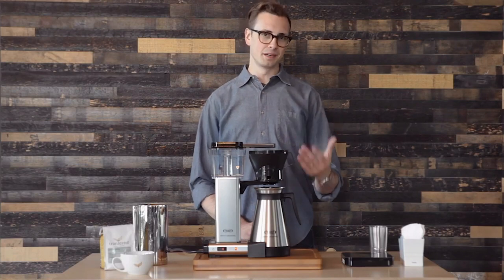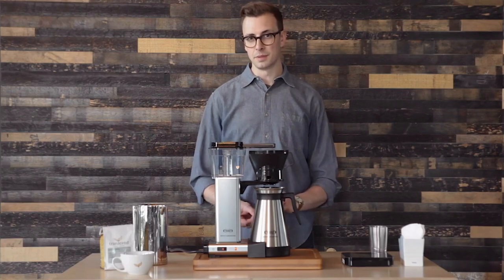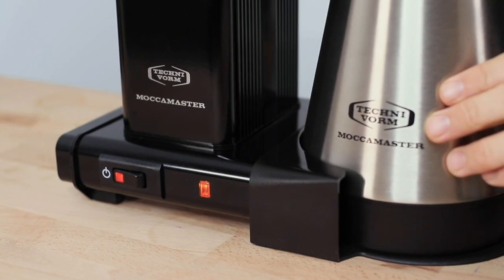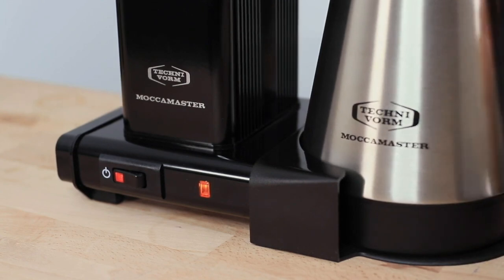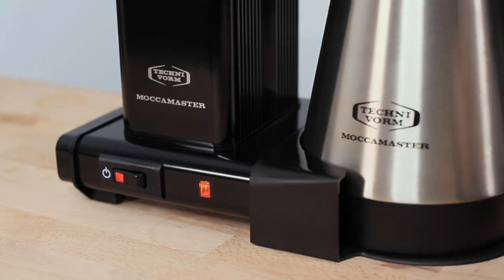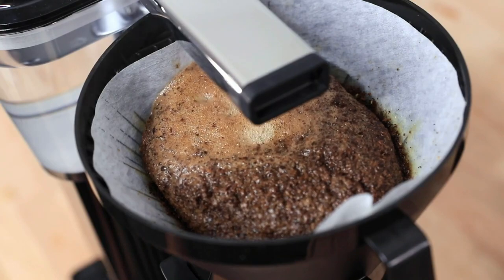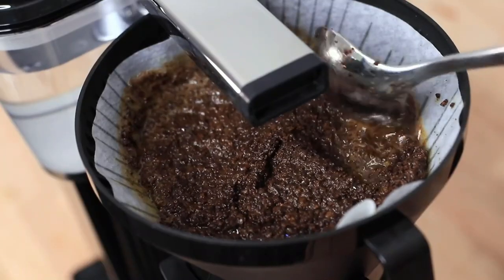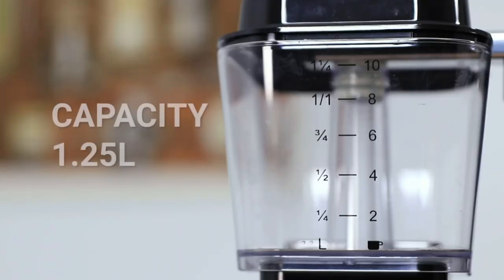The Mokamaster KBGT is versatile, allowing you to brew coffee in various ways. It has a manually adjustable drip stop, so you can control the water flow and customize your coffee's strength. It also has a large water tank, making it easy to brew multiple cups.